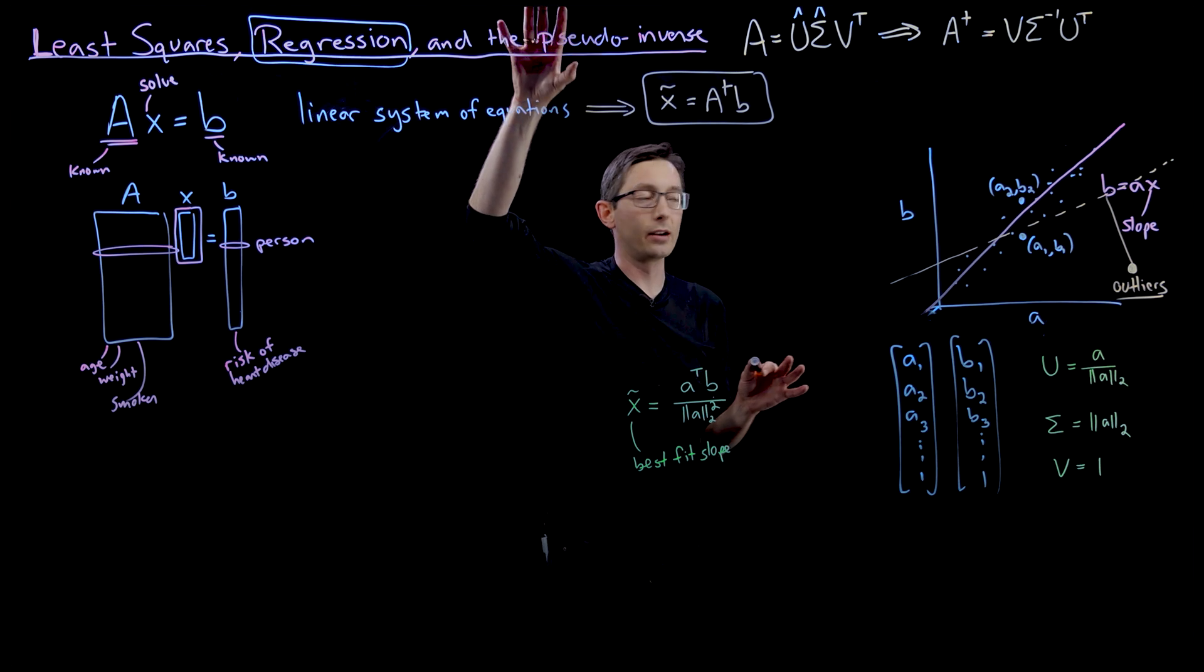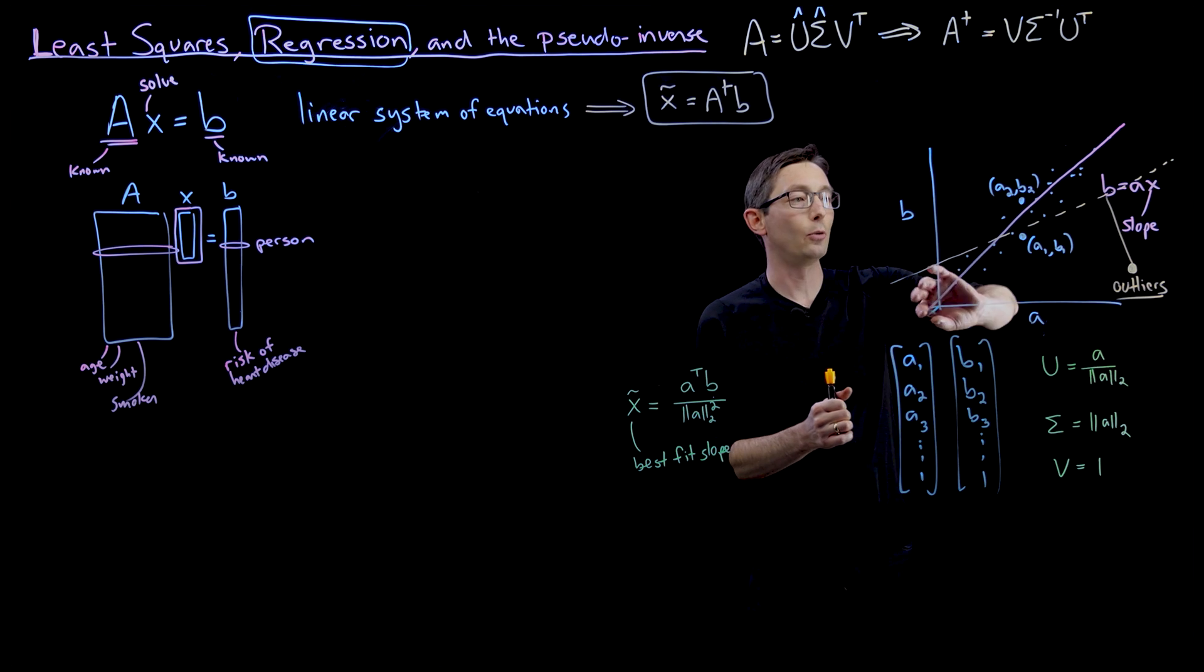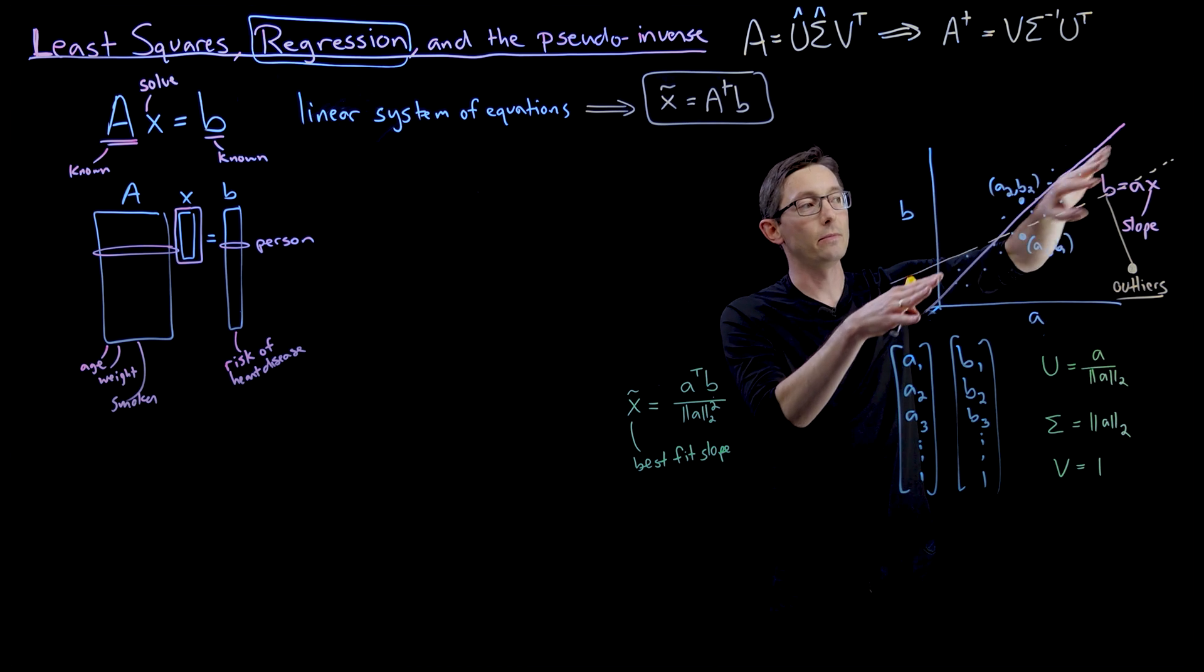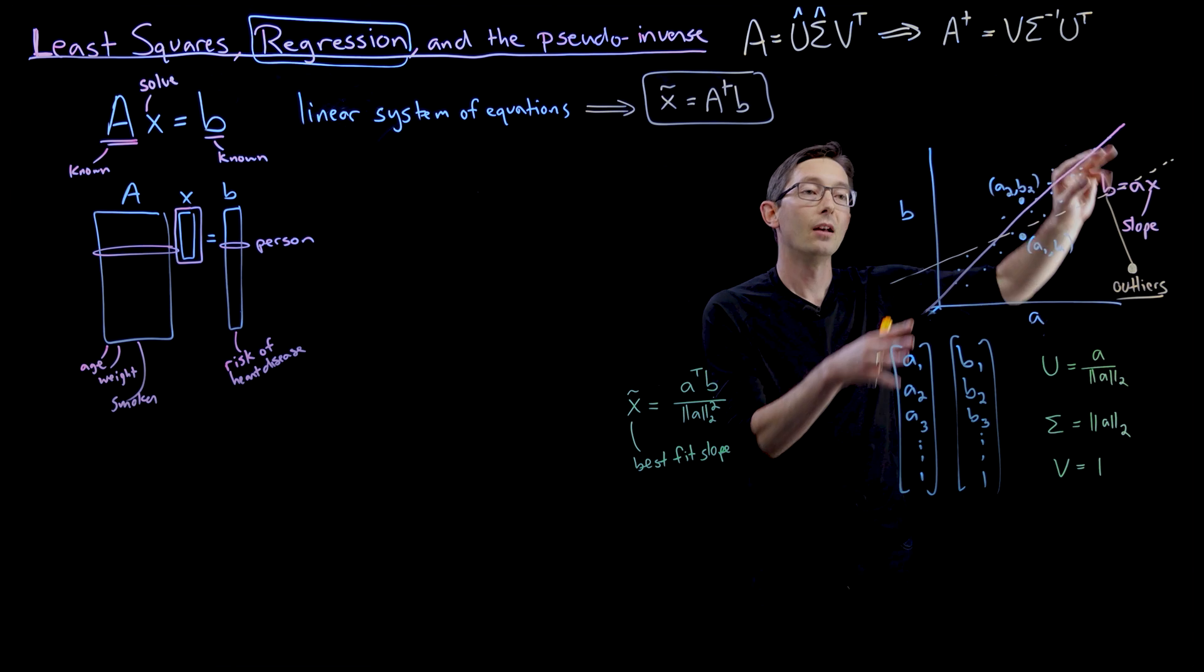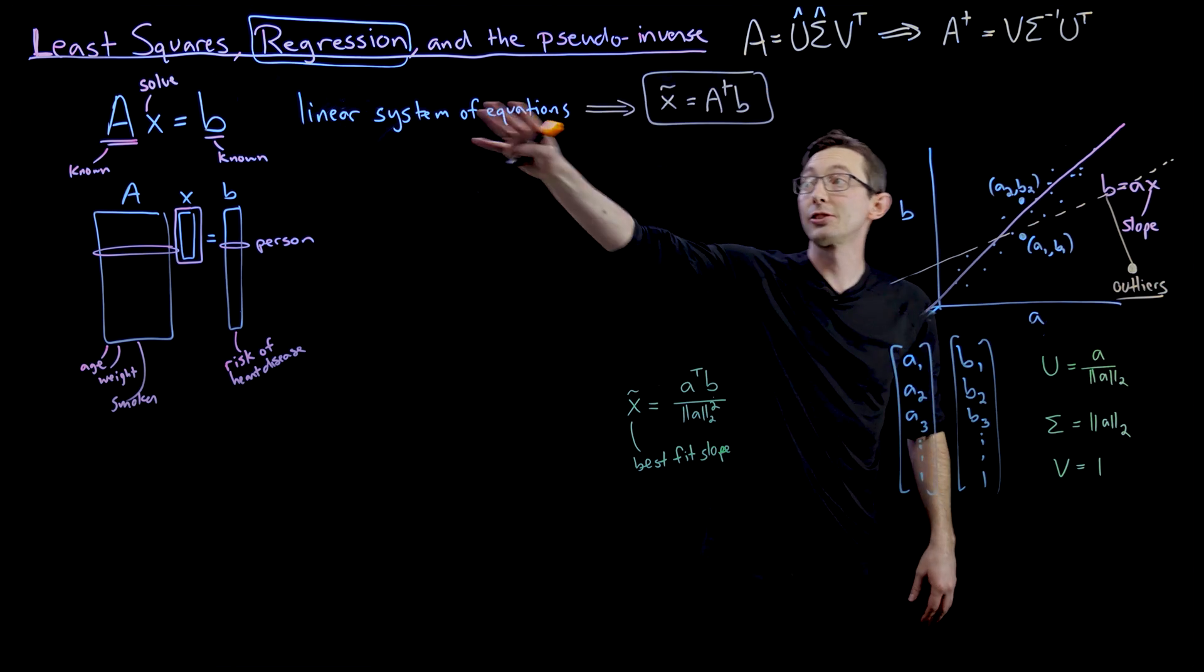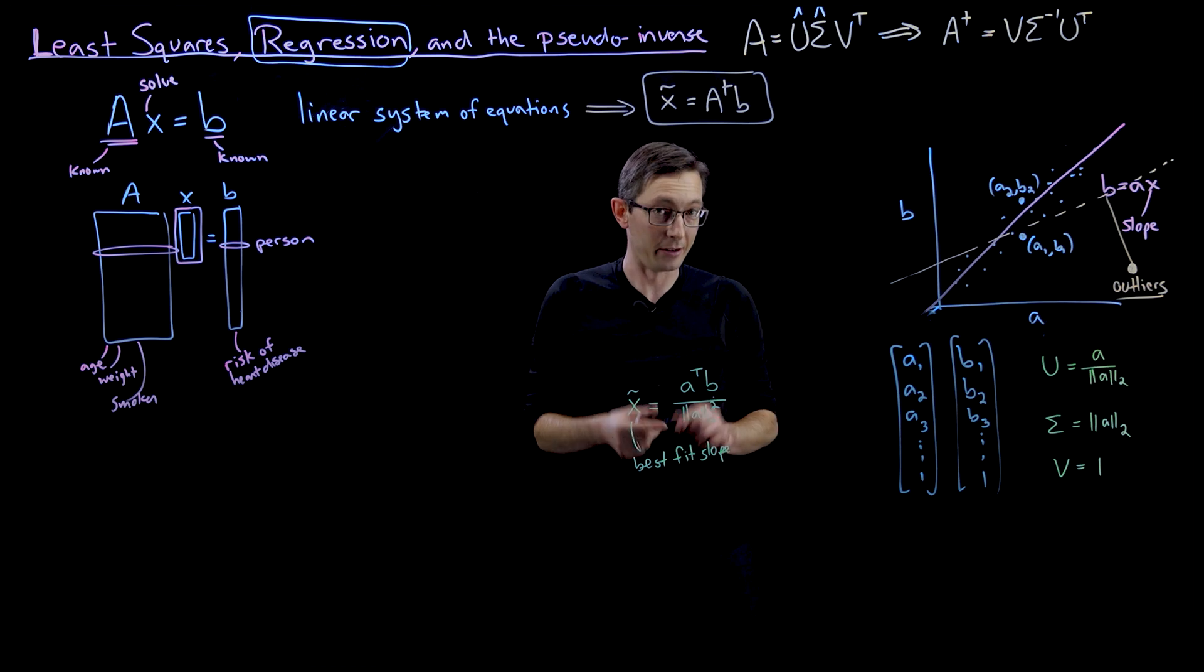And so regular least squares based on the SVD can handle white noise really well. So if there's some Gaussian distributed data, you're going to find the best slope. But if there are a few big outliers, then this is actually going to be very sensitive to those outliers.